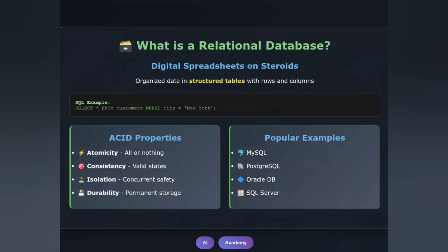Let's start with the granddaddy of databases — relational databases. Think of them as digital spreadsheets on steroids. Relational databases like MySQL, Postgres, SQL, and Oracle organize data in structured tables with rows and columns. Each row represents a record and each column represents an attribute. They follow the ACID principles: atomicity, consistency, isolation, and durability, making them perfect for financial transactions and applications where data integrity is crucial.